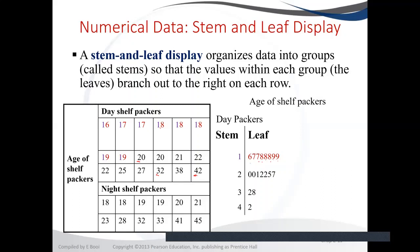For stem 2, the leaves are 0, 0, 1, 1, 2, 2, 5, 7 — those will be our leaves. For the 30s, the stem is 3 and the leaves are 2 and 8, representing 32 and 38.